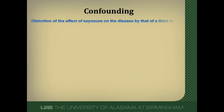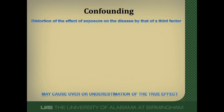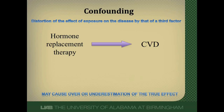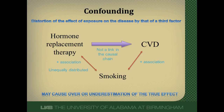Confounding is distortion of the true effect of exposure on disease by some third factor, and it can lead to over- or underestimation of the true effect. Consider a potential association between hormone replacement therapy and cardiovascular disease, and whether smoking could be a confounder. For smoking to be a confounder, it must meet three criteria: it must be associated with the outcome, associated with the exposure, and unequally distributed between the exposed and unexposed — but it cannot be a link in the causal chain from exposure to disease. So smoking could be a confounder here.